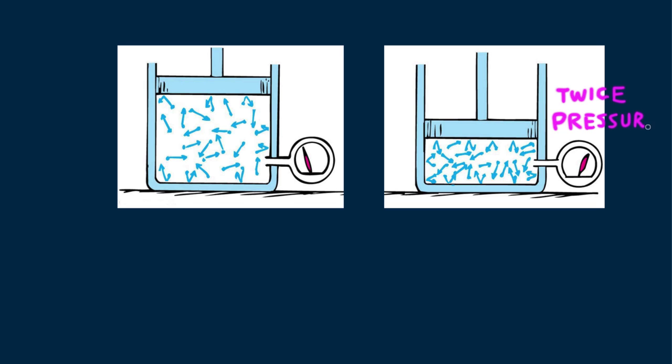That's if the temperature remains constant. And if the piston were pushed down to a volume of one-third its original value, the pressure would increase by three, and so forth. So when the volume of gas is decreased, density and therefore pressure increases. That's providing the temperature remains the same, and the number of molecules remains the same.